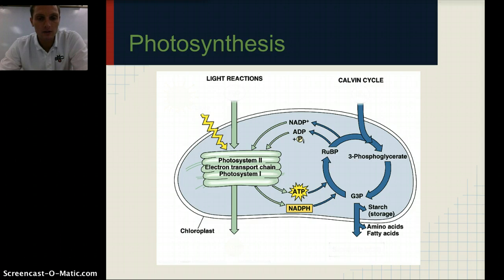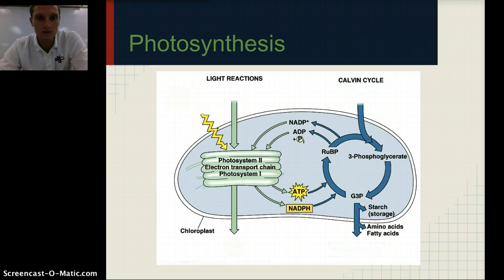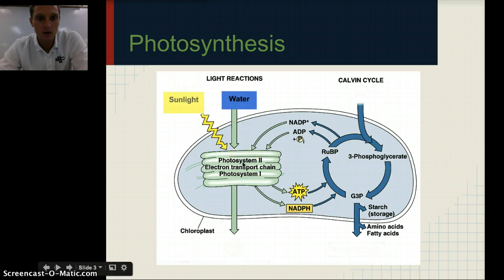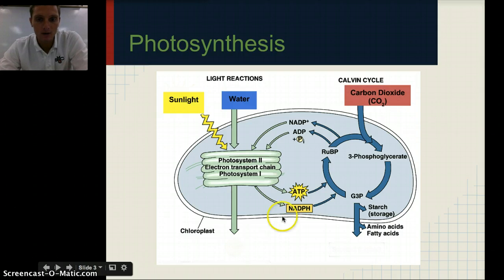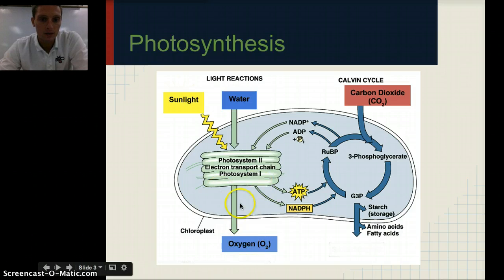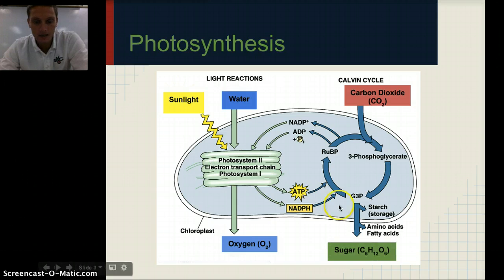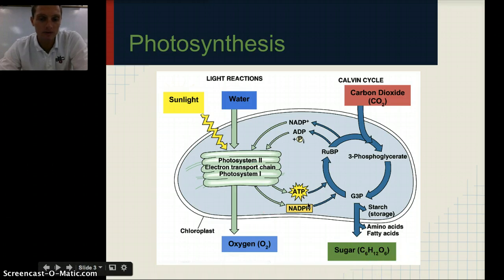Here's a nice diagram that outlines the overall process. This is a little more complicated than what you're required to know, but it shows the two different parts: the light reactions and the Calvin cycle. In the light reactions, water and sunlight go in through photosystem 1, photosystem 2, and the electron transfer chain. The second input is carbon dioxide, used during the Calvin cycle. Oxygen is produced as a result of the photosystems, and the end result is sugar — glucose, with the chemical formula C6H12O6. You'll need to know that formula.